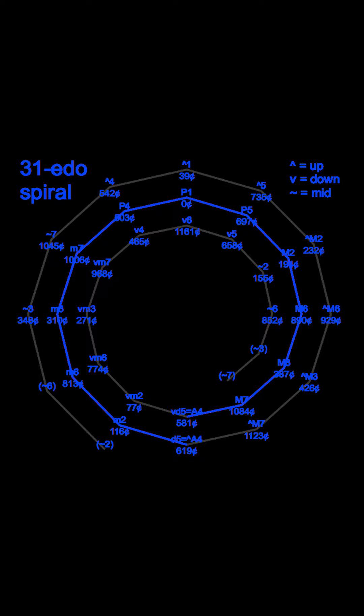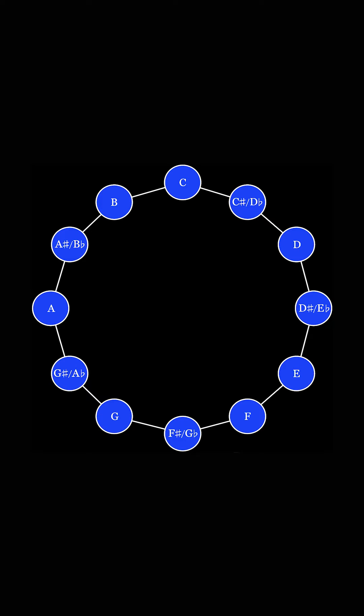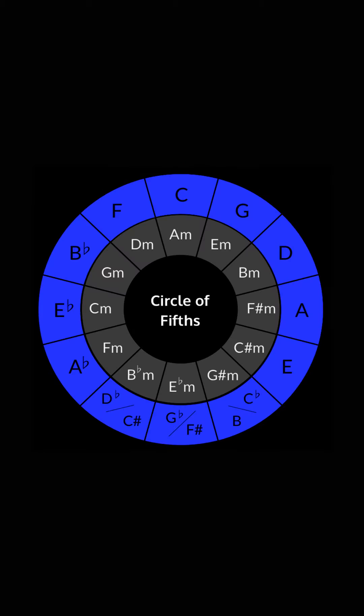What would happen to music theory if we had 31 notes instead of 12? Typically, we divide an octave into 12 equally spaced notes. This gives us the chromatic and diatonic language we use to form the harmonic structure of Western music.